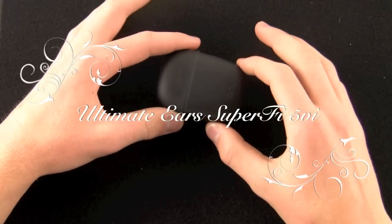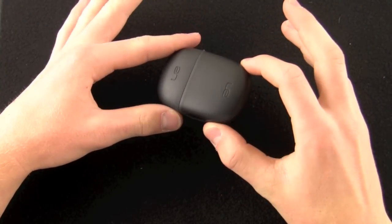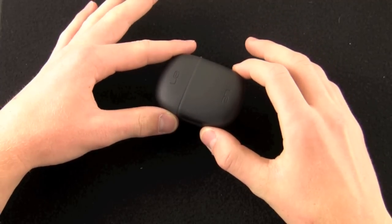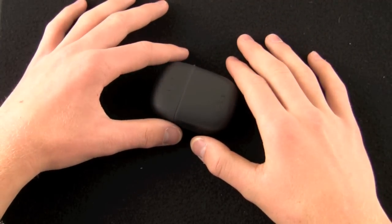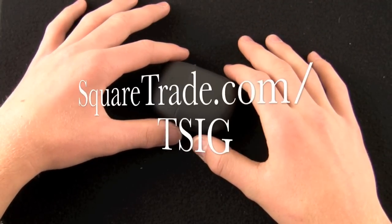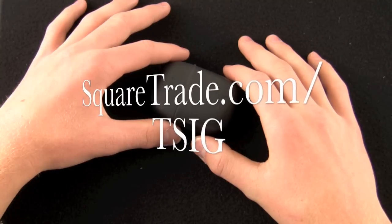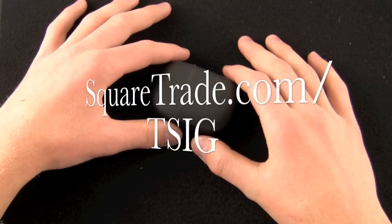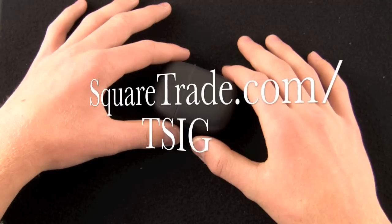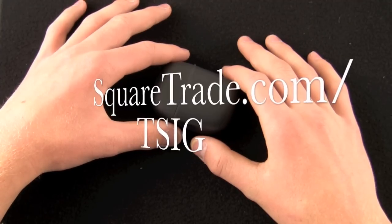Hey folks, this is Quinn, that snazzy iPhone guy, and this is the video review of the Ultimate Ears SuperFi 5 VI headphones. This video is brought to you by SquareTrade.com for the ultimate iPhone warranty. Go to www.Squaretrade.com.tsig to save $35 of your two year warranty.